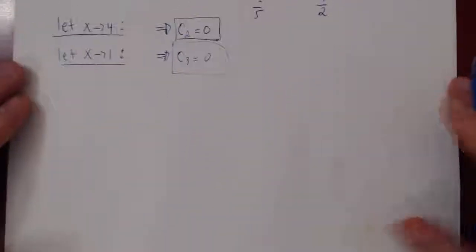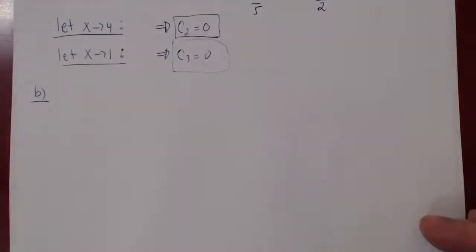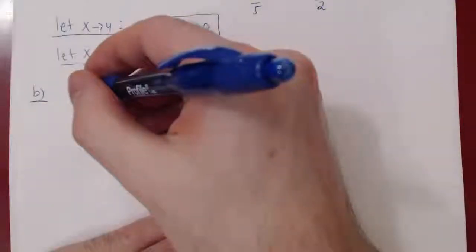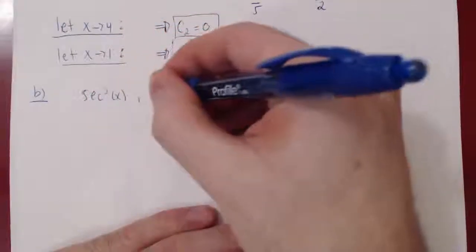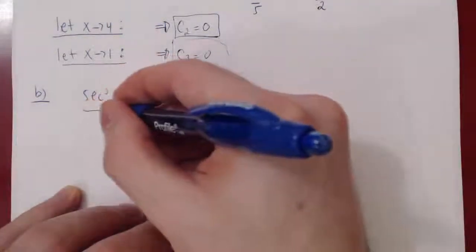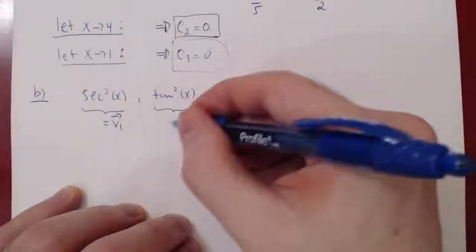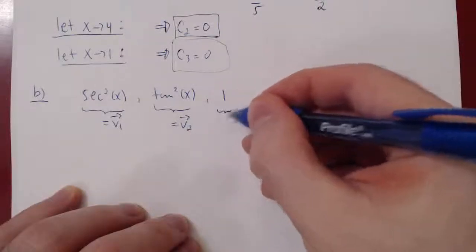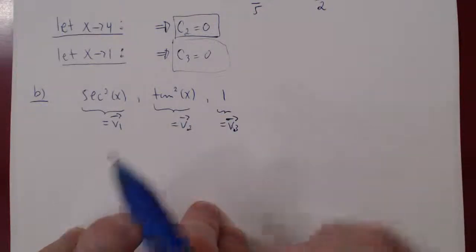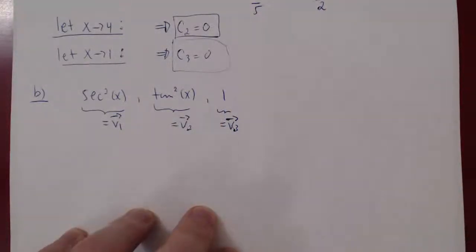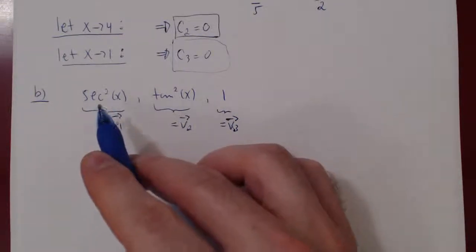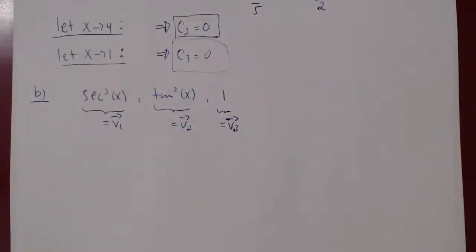Let's do two more examples. We again consider the vector space of all functions. What if we consider trigonometric functions — say, secant squared of x (v1), tangent squared of x (v2), and the constant function 1 (v3)? The question is the same: are these three functions linearly independent or dependent?